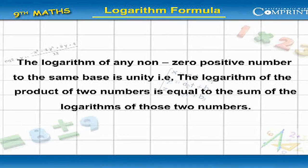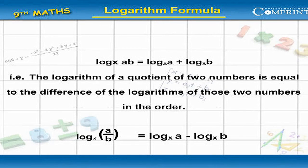The logarithm of the product of two numbers is equal to the sum of the logarithms of those two numbers. Log ab base x equals log a base x plus log b base x.